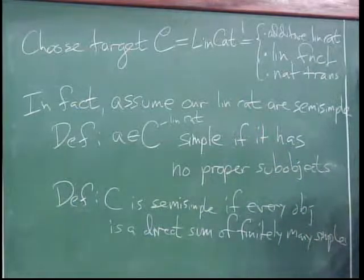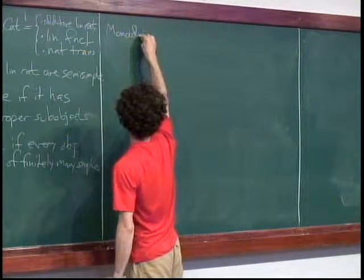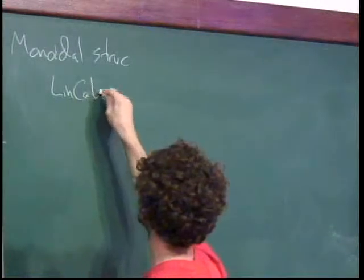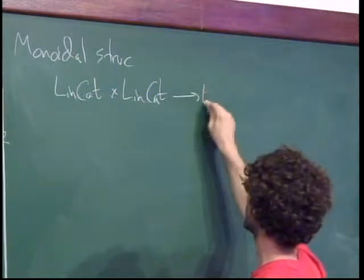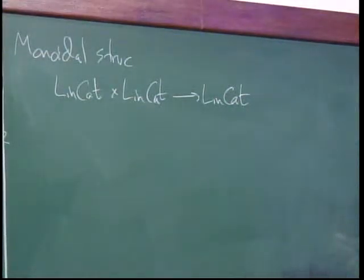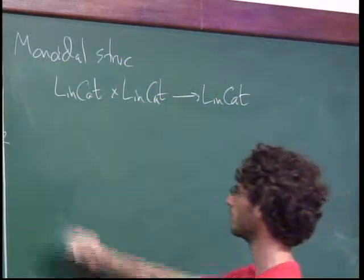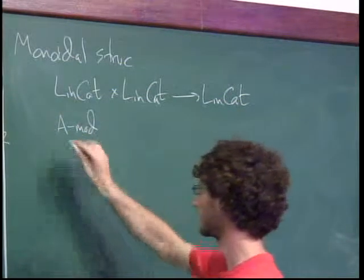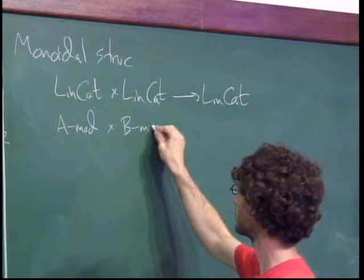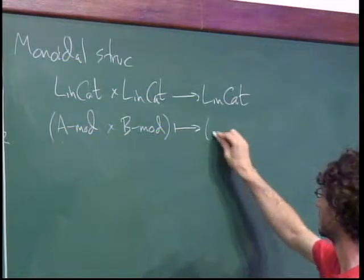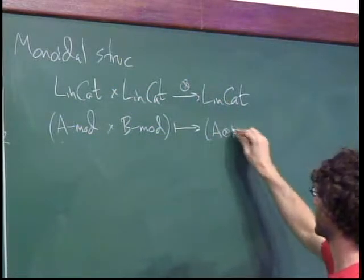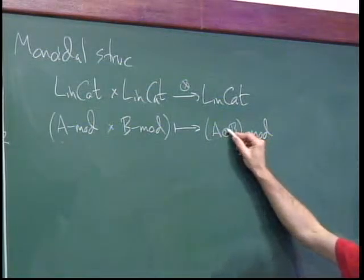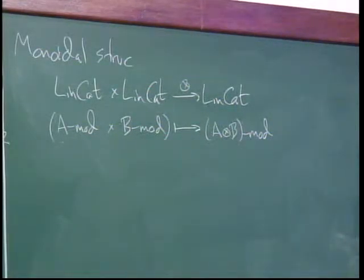This thing is supposed to have some kind of monoidal structure, so I need to talk about the tensor product of linear categories. A particular kind of linear category is A-mod for some algebra A. If I take two such gadgets, A-mod and B-mod, their tensor product as linear categories is equivalent to representations of the tensor product A⊗B.